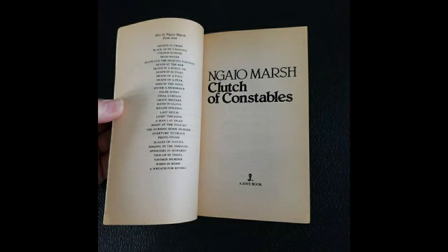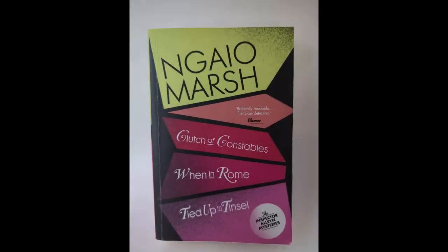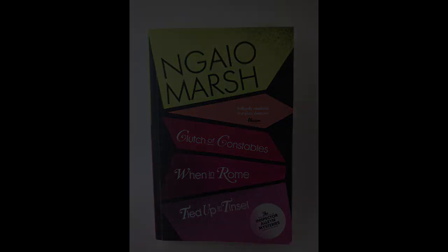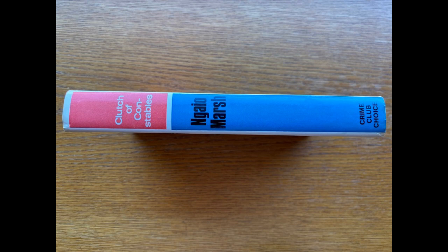The novel's setting is both idyllic and deceptive. The peaceful river cruise through the English countryside initially presents a relaxed and serene backdrop, yet this calm is quickly overshadowed by an undercurrent of danger. The tension builds as Troy becomes suspicious of her fellow passengers, recognizing that something is amiss. The contrast between the scenic journey and the lurking threat heightens the suspense, a hallmark of Marsh's ability to play with setting and atmosphere.